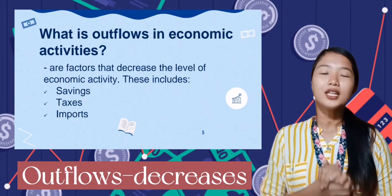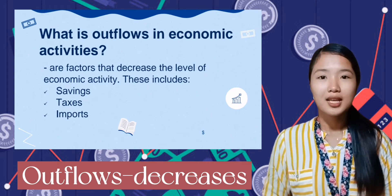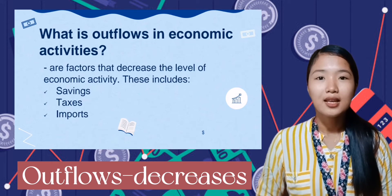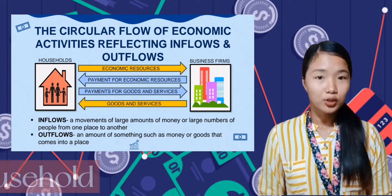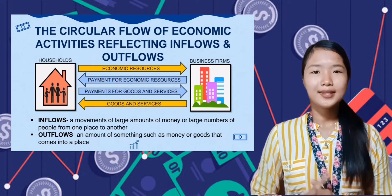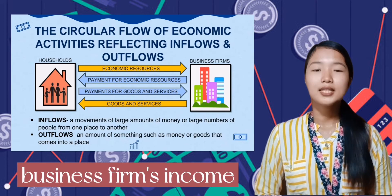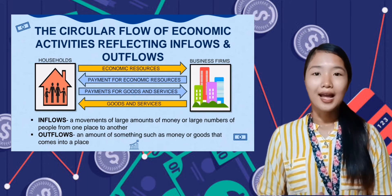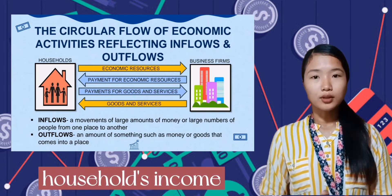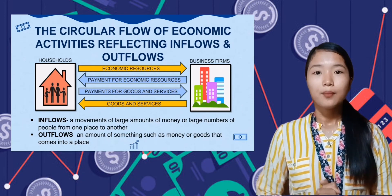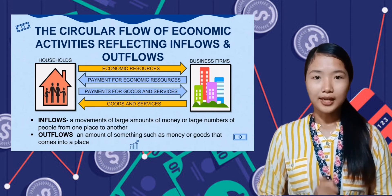Outflows in economic activities are factors that decrease the level of economic activity. These include savings, taxes, and imports. The pictures show that the household and the business firm are dependent on each other — the income of the business firm is considered the expenses of the household. On the other hand, the income of the household is the expenses of the business firm. So it is a vice versa give-and-take relationship.